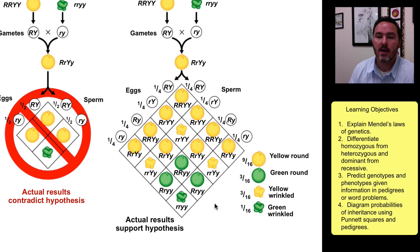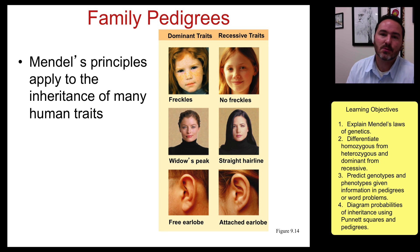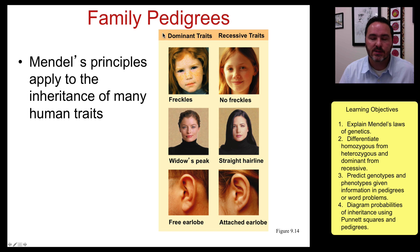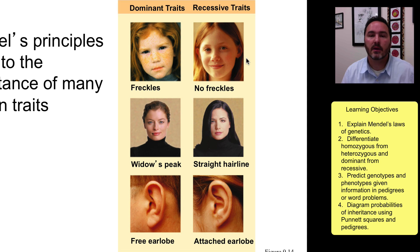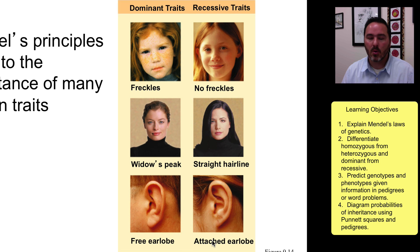This could also have been figured out using the rules of probability — asking what's the probability of getting yellow, green, wrinkled, or round — and calculating those probabilities that way. In humans, we cannot manipulate human reproduction like we do in pea plants, so we work backwards using pedigrees. There are some characteristics in humans that behave as Mendelian inherited traits, controlled by a single gene — examples include freckles or no freckles, widow's peak or straight hairline, and free or attached earlobe.